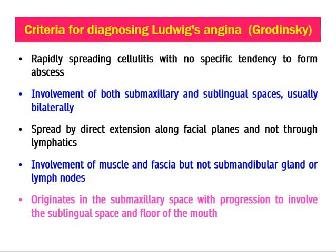Grodinsky has given certain criteria for diagnosing Ludwig's angina. There is rapidly spreading cellulitis with no specific tendency to form abscess — initially there is cellulitis that is rapidly progressive, and abscess forms later. The inflammation should involve both the submandibular and sublingual spaces, usually bilaterally. The infection spreads from one angle of the mandible to the other and down the neck, spreading by direct extension along fascial planes and not through the lymphatics. Importantly, there should be involvement of muscle and fascia but not the submandibular gland or lymph nodes.